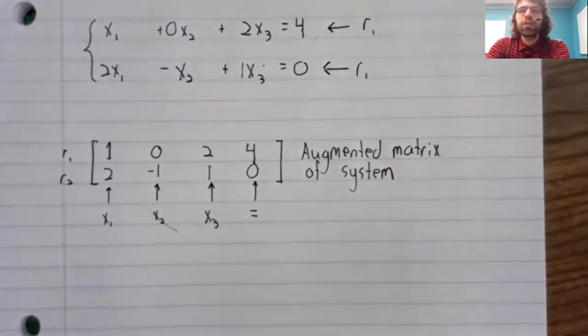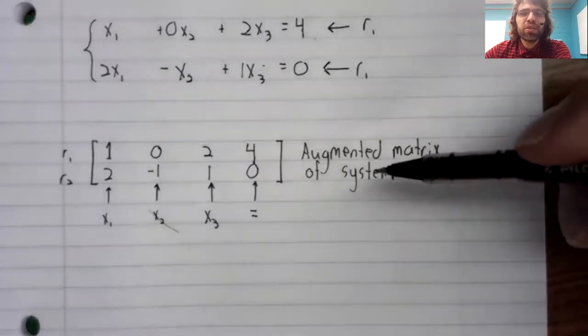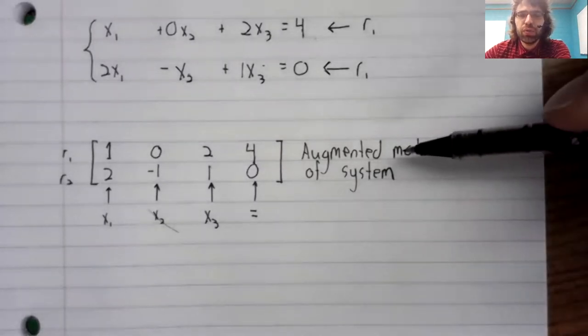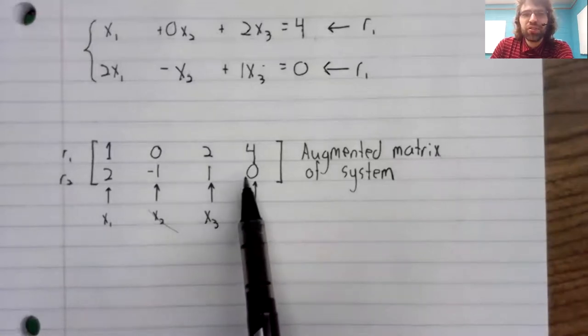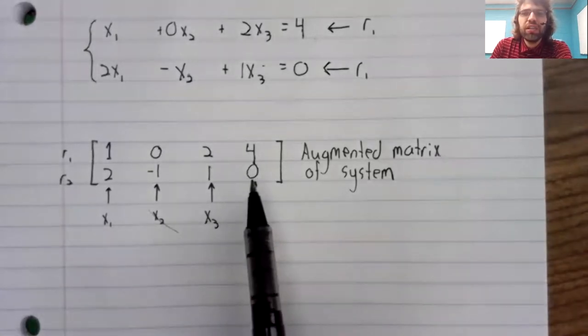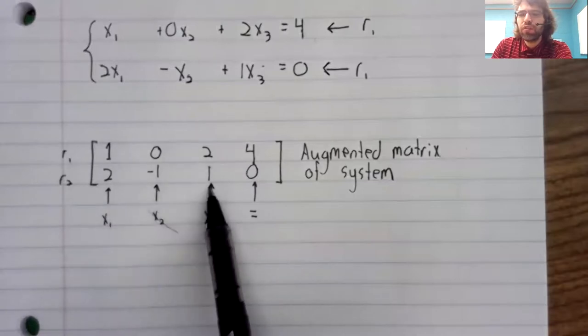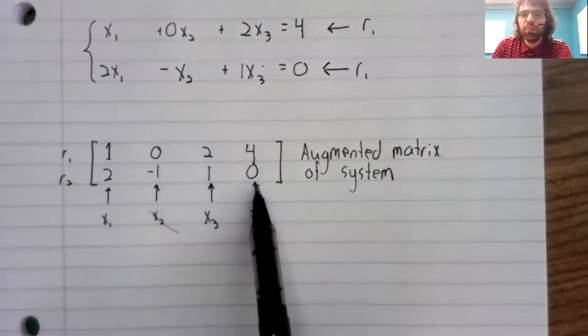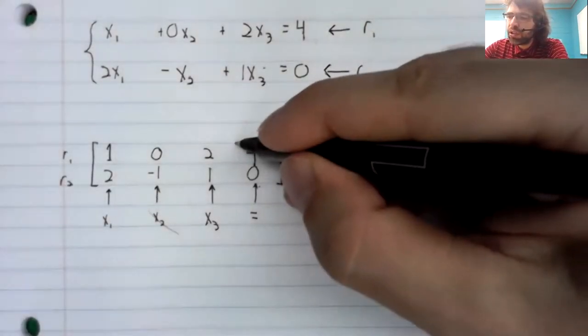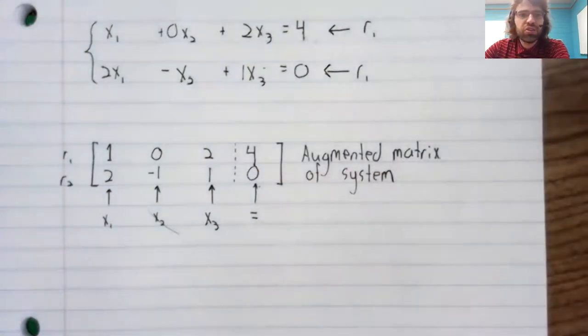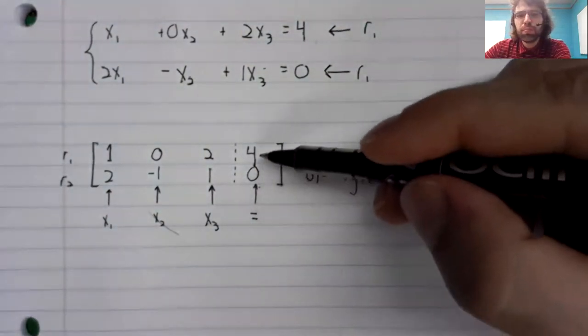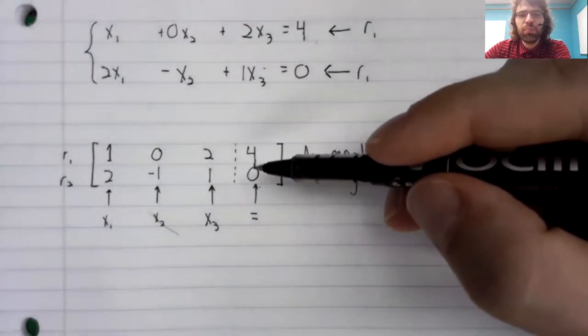One last comment. If you're looking online for help, that's certainly always fine. You might see slightly different notation though. What a lot of textbooks and authors do is they say that this last column is fundamentally different from these other columns. These columns correspond to variables. The last column doesn't.